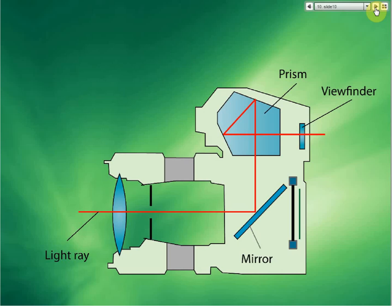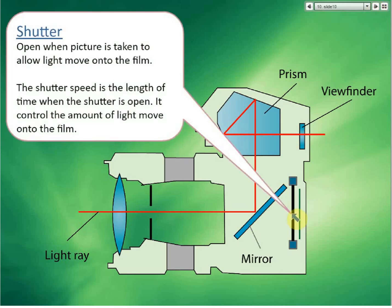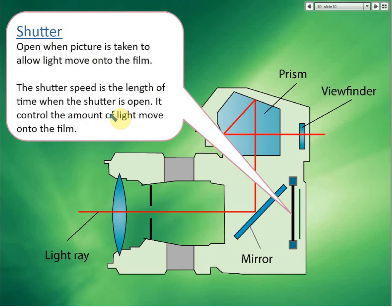Then we have the shutter. As you can see, the shutter is closed — it is usually closed. When you take a photo and press the button, the shutter will open. The light will then reach the film and change the chemicals on the film. The shutter opens when a picture is taken to allow light to fall onto the film.